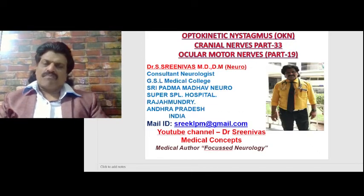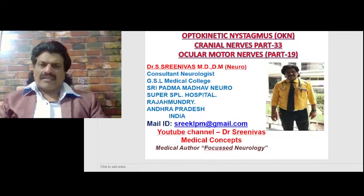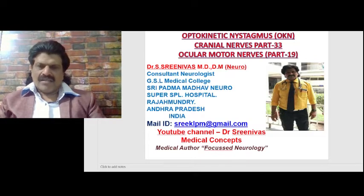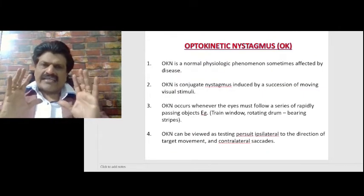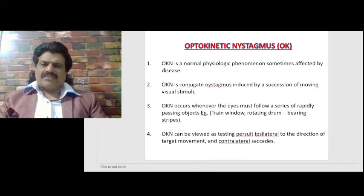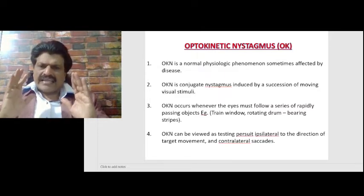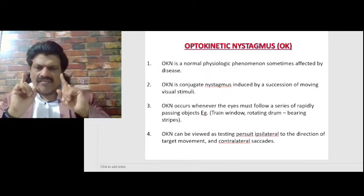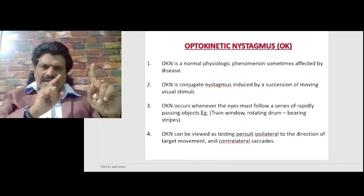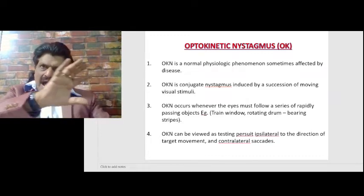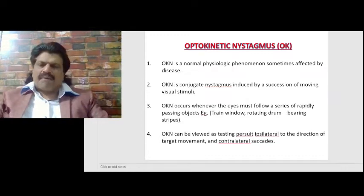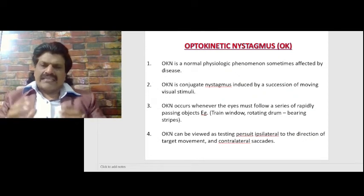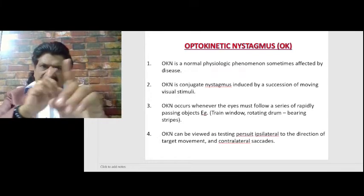Cranial nerve series part 33, ocular motor series part 19. Optokinetic nystagmus occurs whenever the eyes must follow a series of rapidly passing objects — for example, a train window, or a rotating drum bearing stripes.